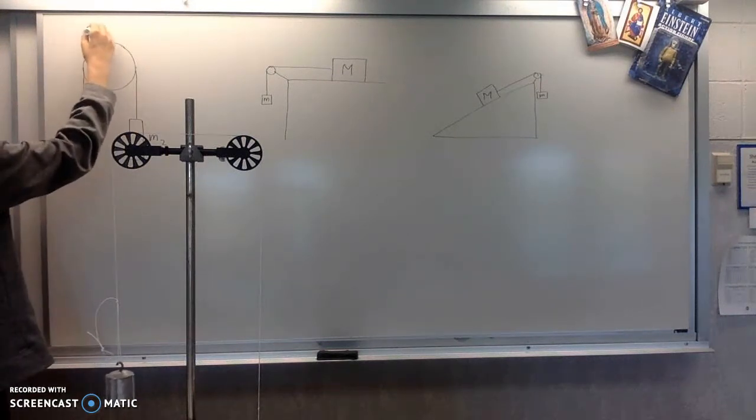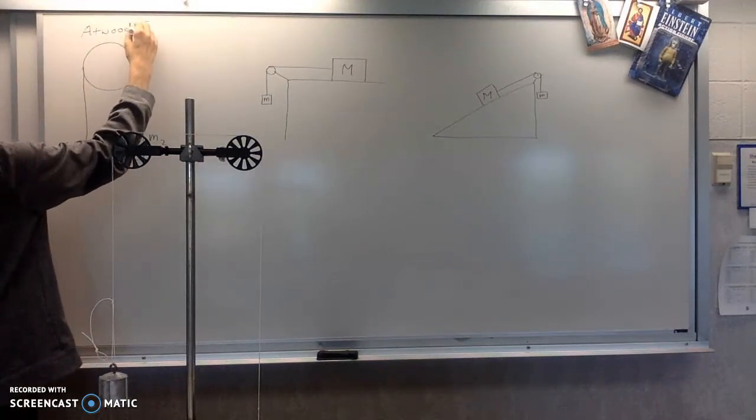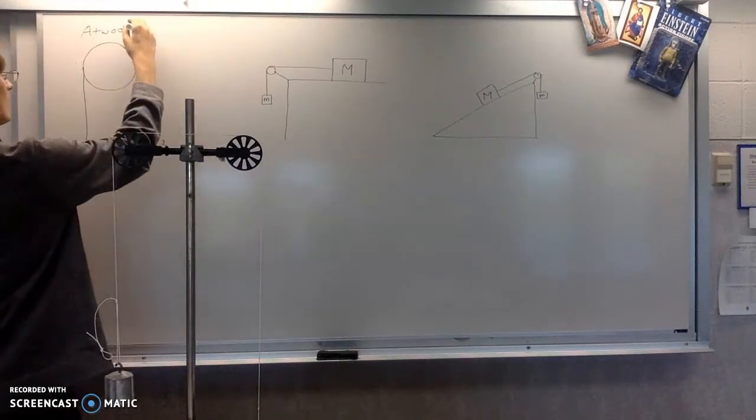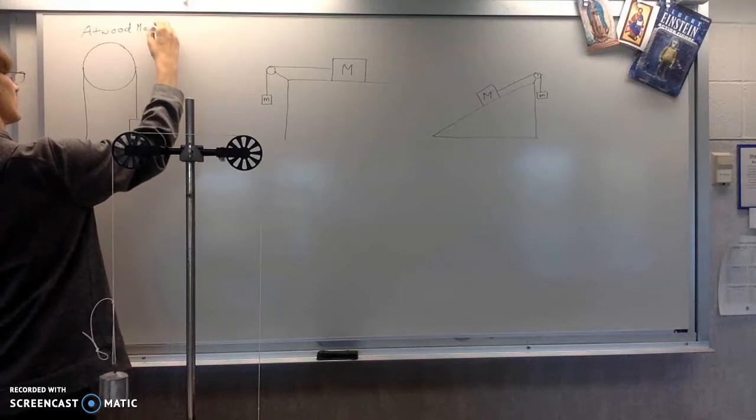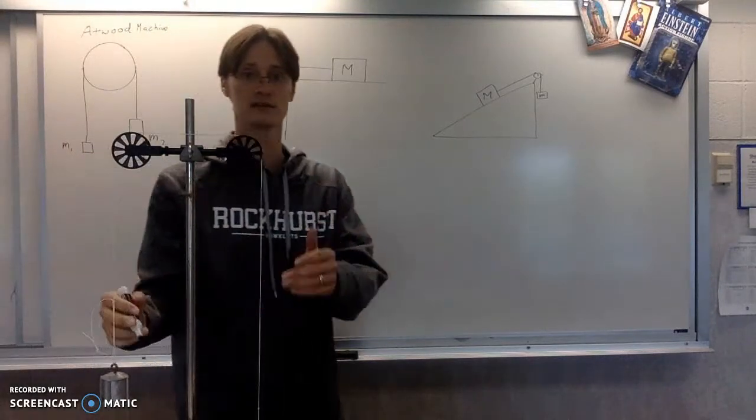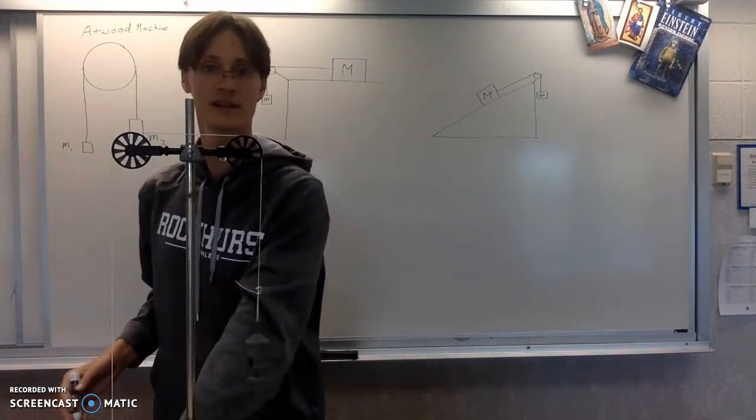They don't all look like this. In fact, as you can see in front of you, for the Atwood machine usually it's two pulleys, as you can see right here. This is an Atwood machine. You can't see the other weight because it's out of the frame of the picture, but there it is.